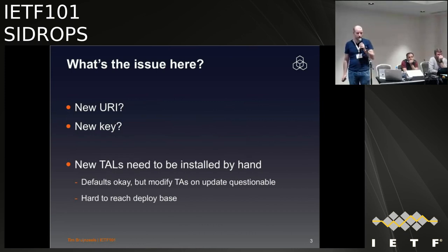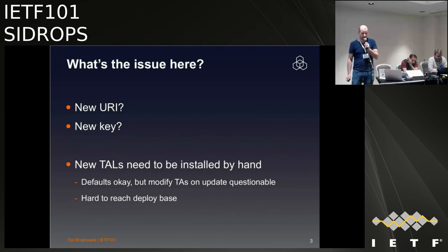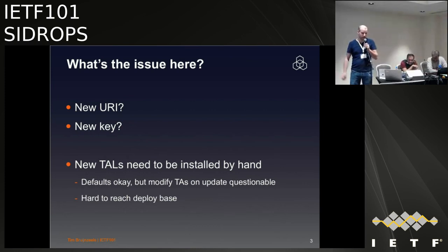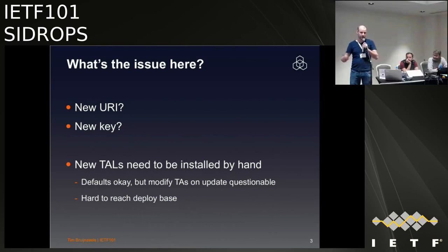What's the issue? Sometimes new URIs may be applicable — HTTPS for TALs is a potential use case. There may also be a need for a new key. In our case, we use hardware security modules to protect our key, but currently we're locked into one vendor and it would be nice to change. If you need to communicate a new TAL, it's pretty undefined at the moment — they need to be installed by hand. It's hard to reach the deployed base and get people to do this.